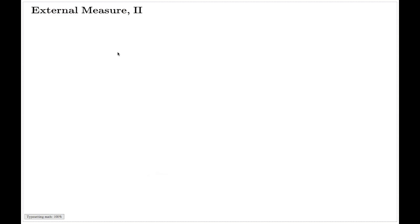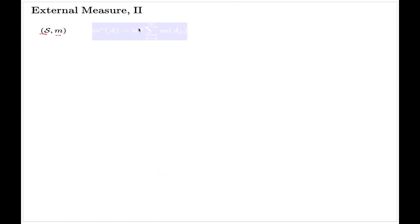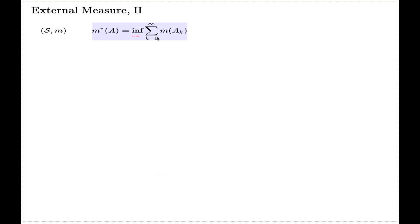This is the second set of comments on external measure, and the results we prove here will be of crucial importance to the next set of videos, which will establish the Lebesgue extension theorem for measures. Again, I quickly recall the setting: we have a semi-ring and the measure. This is the way we define the external measure — it was the infimum over all possible coverings.